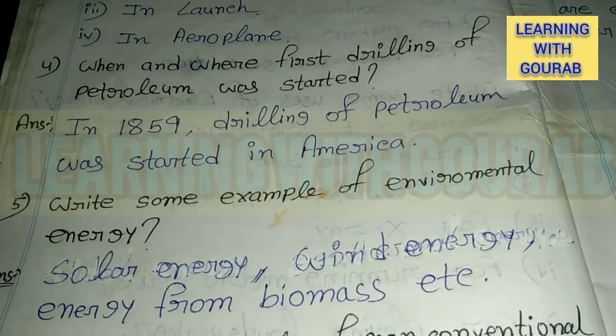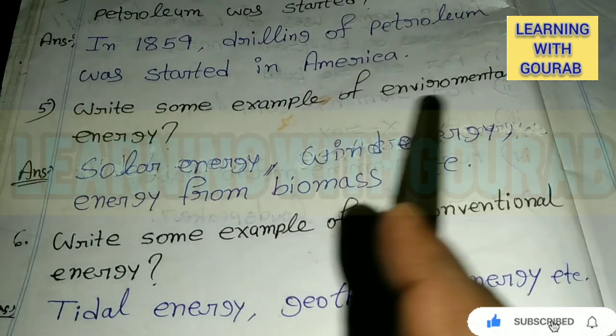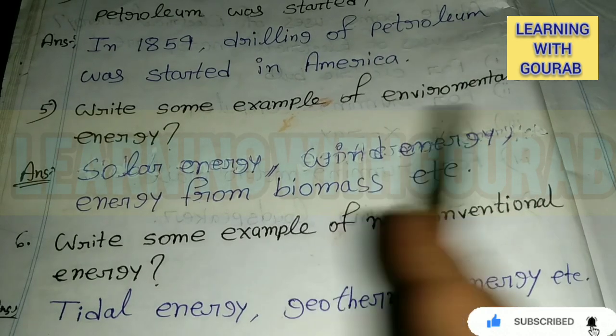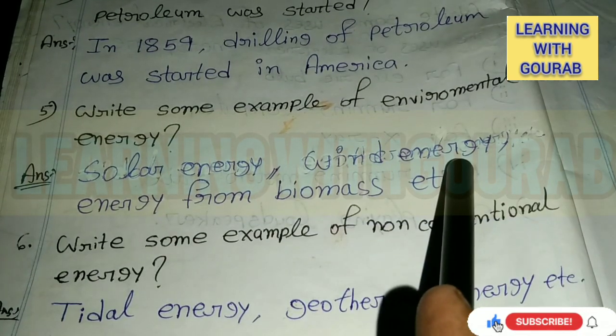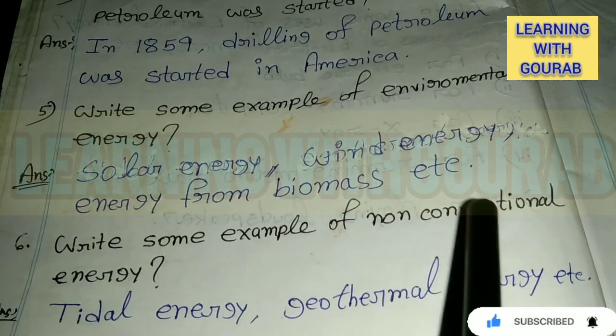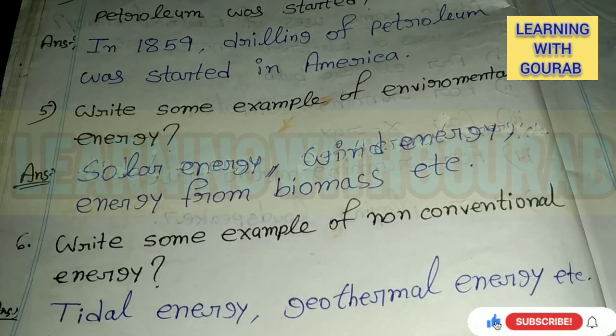Next question: Write some examples of environmental energy. Answer: Solar energy, wind energy, energy from biomass, etc. Next: Write some examples of non-conventional energy. Answer: Tidal energy, geothermal energy, etc.